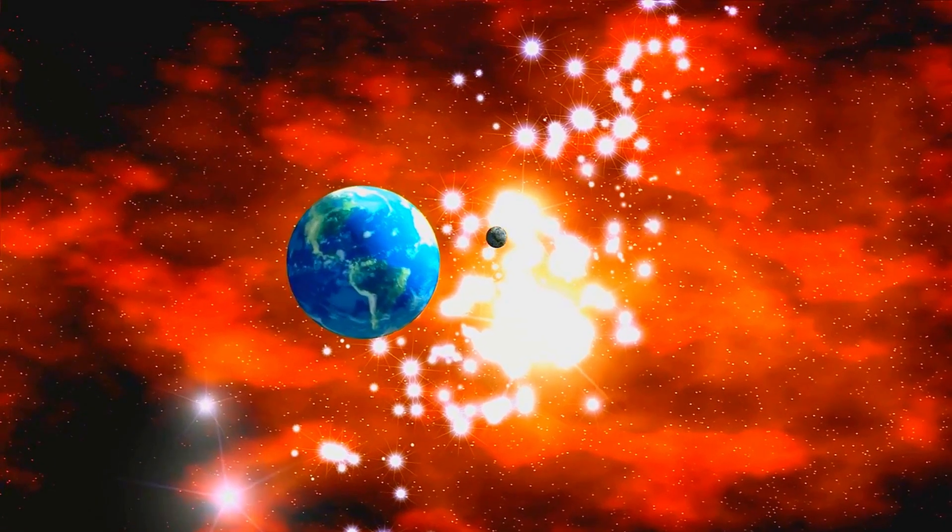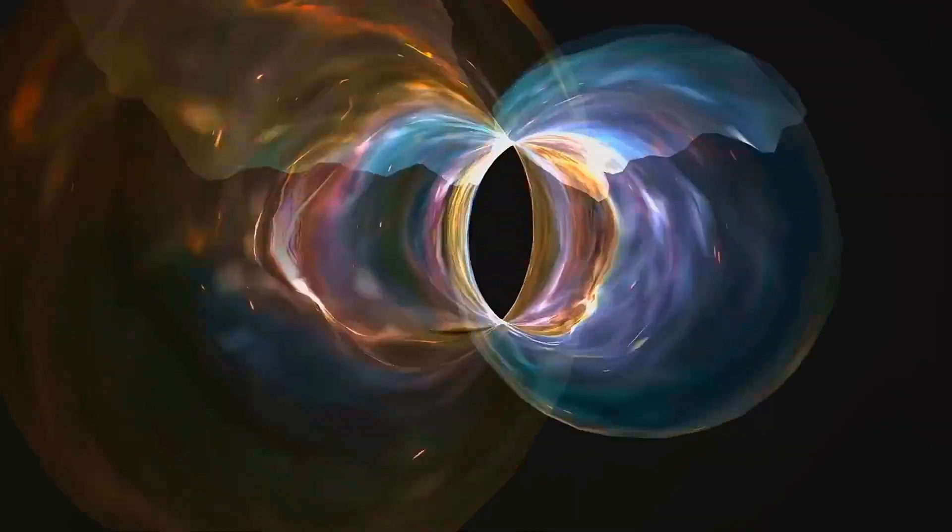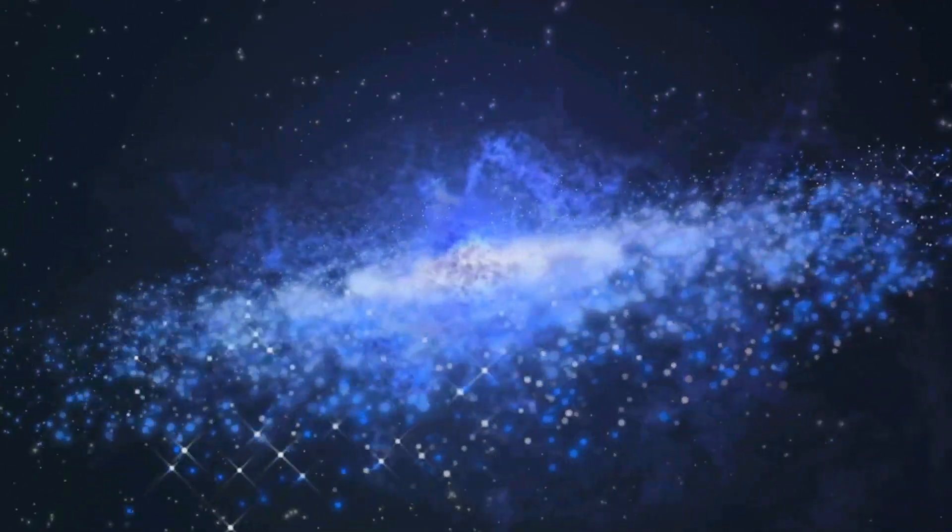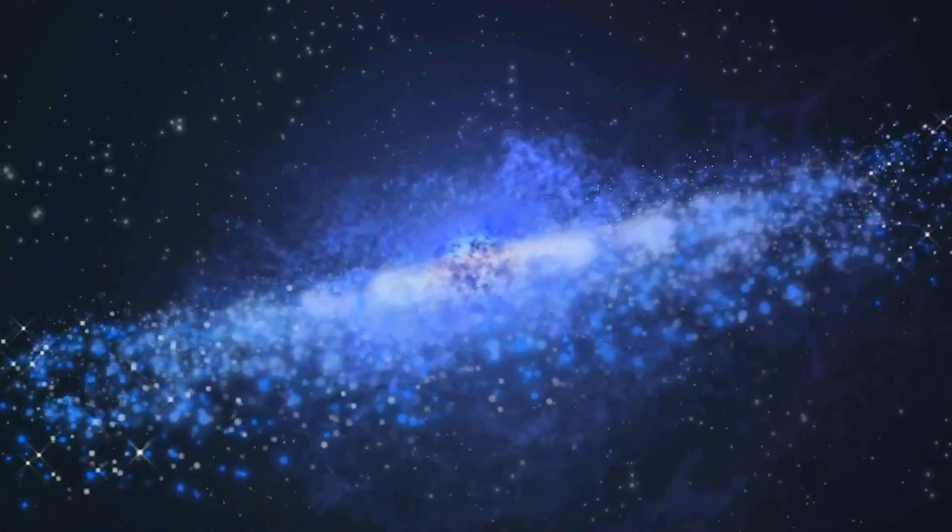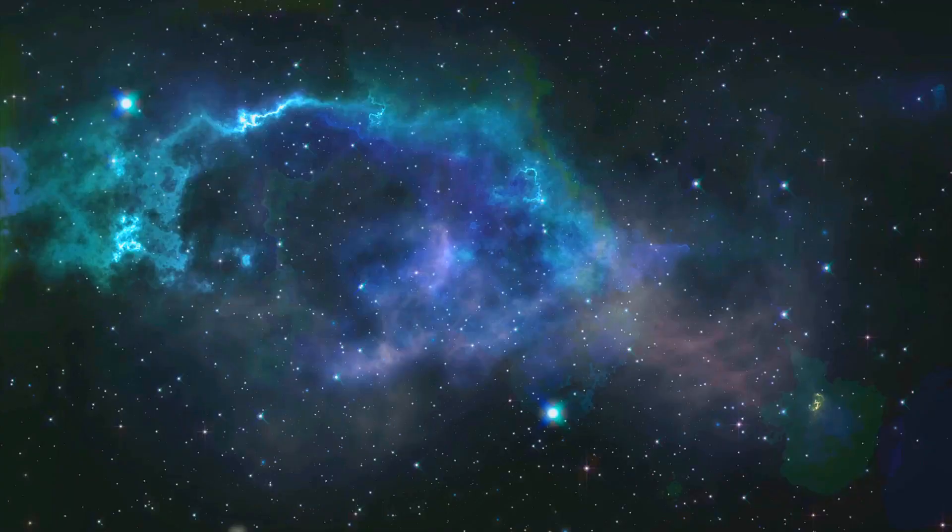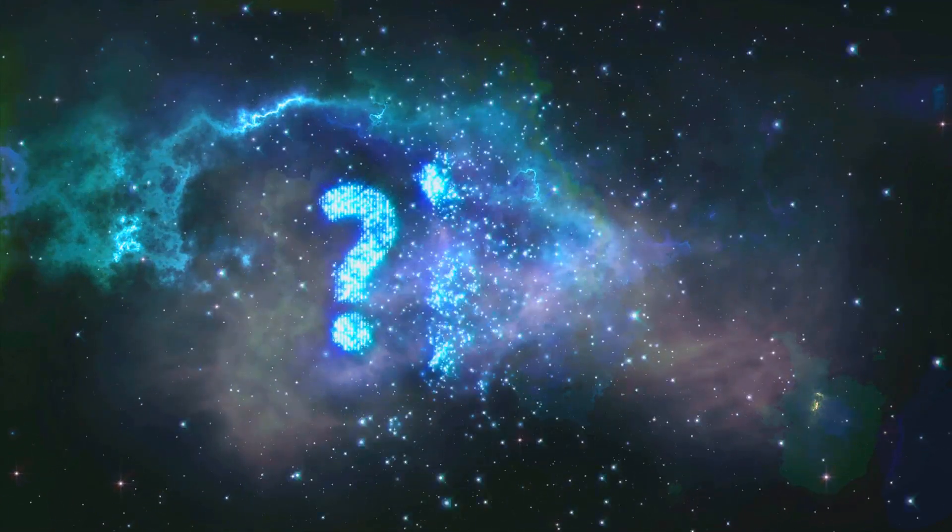These laws, intriguingly, seem finely tuned for the existence of life. Change one constant, even slightly, and the universe as we know it could cease to be. Stars wouldn't form, planets wouldn't coalesce, and the delicate balance needed for life would be shattered. This apparent fine-tuning has led some to see purpose in the universe. Is it mere coincidence, or is there a deeper reason for this delicate balance? The question remains open, a tantalizing puzzle for physicists and philosophers alike.